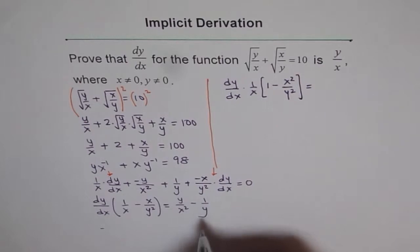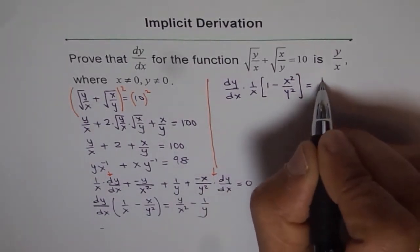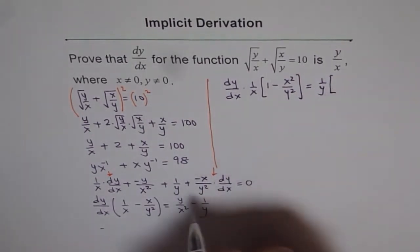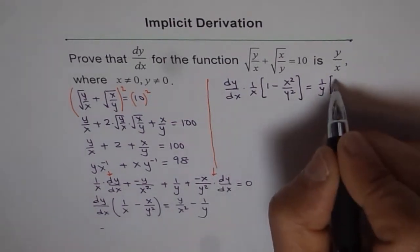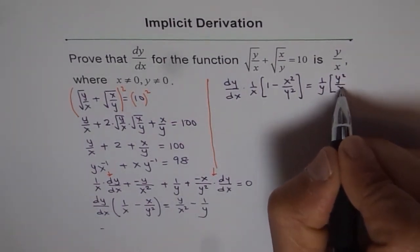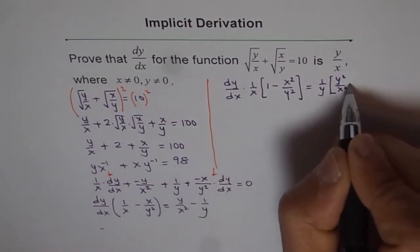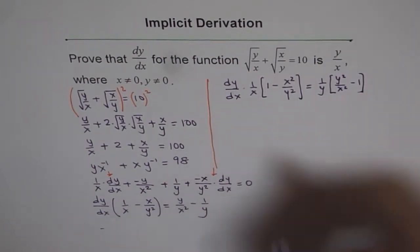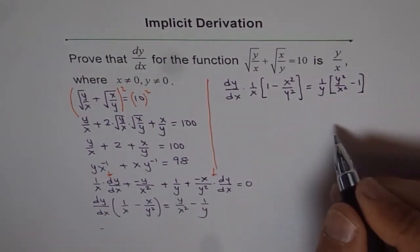And on the right side, I will take 1/y common. So I get (1/y)(y²/x² - 1). Do you see that? So that is the kind of strategy I utilized.